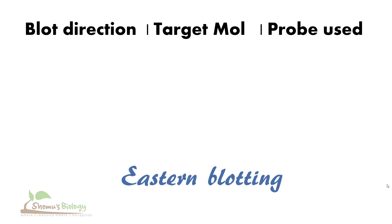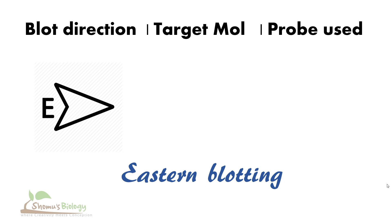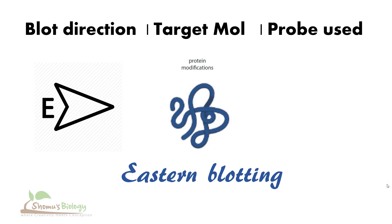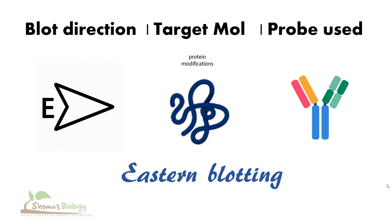The second type is eastern blotting. Eastern blotting is used to detect protein modifications — not exactly proteins, but protein modifications — and that is detected with the help of an antibody.